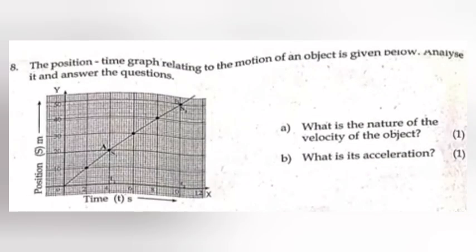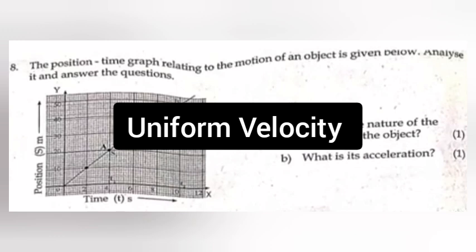8. The position-time graph relating to the motion of an object is given below. Analyze it and answer the questions. a. What is the nature of the velocity of the object? Answer: uniform velocity. b. What is its acceleration? Answer: 0.